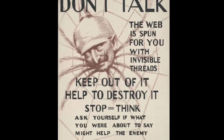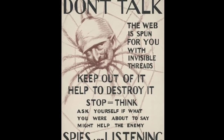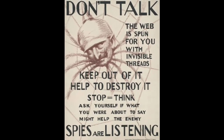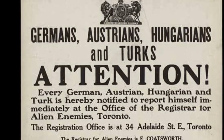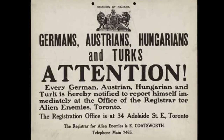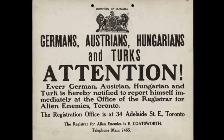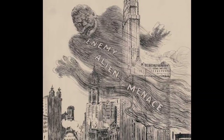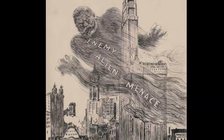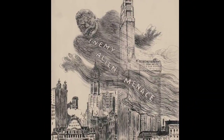Historical context: The Alien Enemies Act of 1798 was originally passed during the Quasi-War with France. It granted the president the authority to address potential threats posed by individuals from nations at war with the United States. This legislation was part of a series of laws known as the Alien and Sedition Acts, enacted during a period of heightened tensions between the U.S. and France.